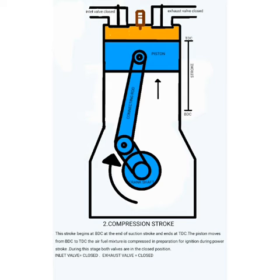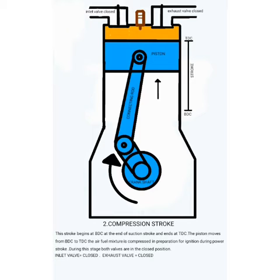Compression Stroke. This stroke of the piston begins at bottom dead center (BDC), just at the end of the suction stroke, and ends at top dead center (TDC). In this stroke, the piston compresses the air-fuel mixture in the cylinder in preparation for ignition during the power stroke. Both valves are closed during this stroke.